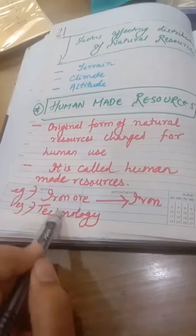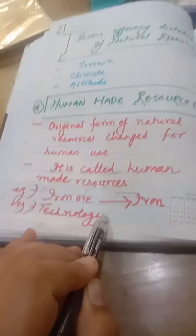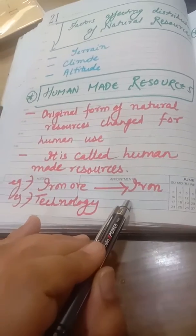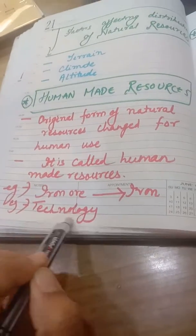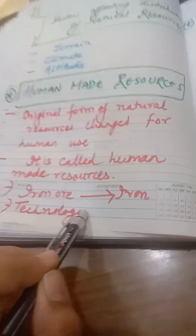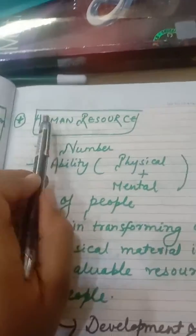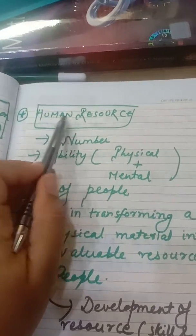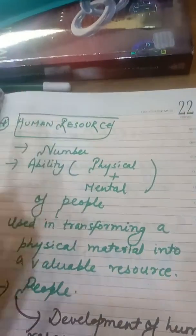Another example: technology. As long as we did not use it, it was just technology, but when we used it to start making new things, it got converted into a human-made resource. Now, the third type: human resources. We know natural resources and human-made resources — now what is human resource?